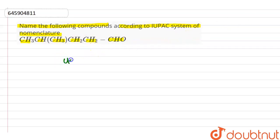our given compound is CH3CH and CH3 is present, their branch, then CH2CH2CH2CH2 and here our functional group is,